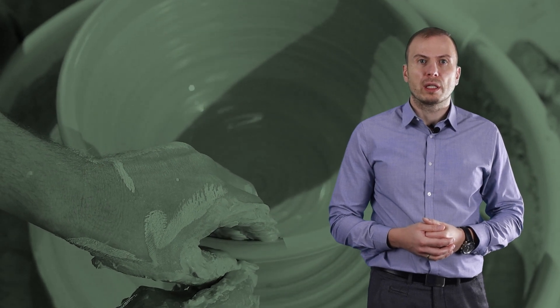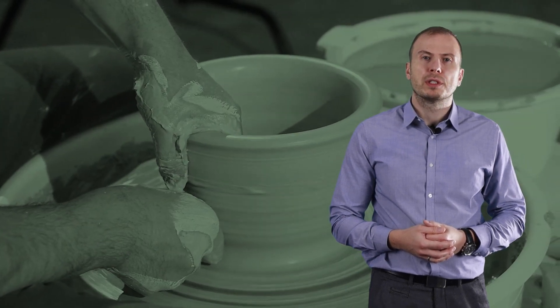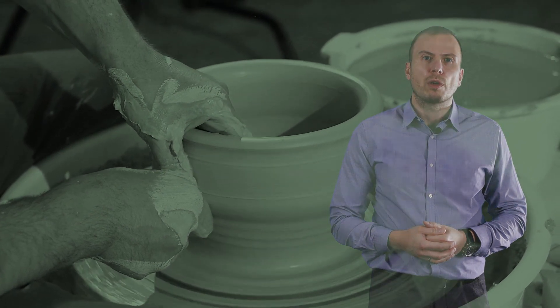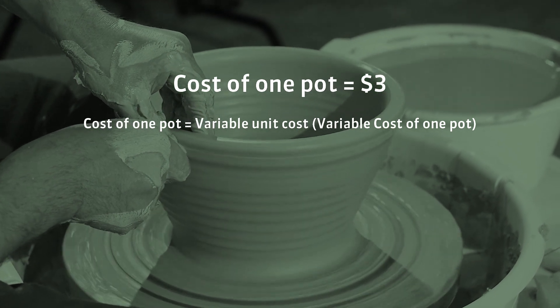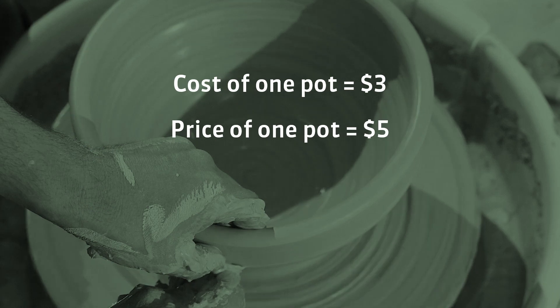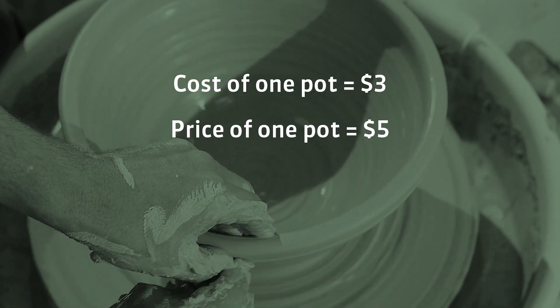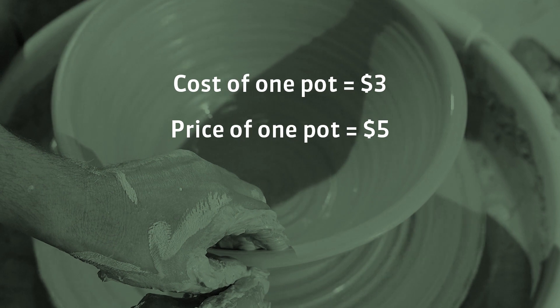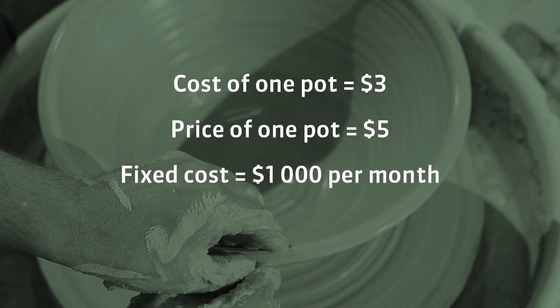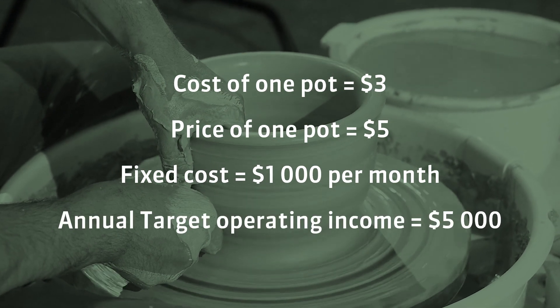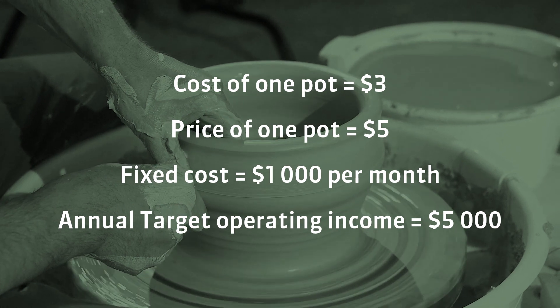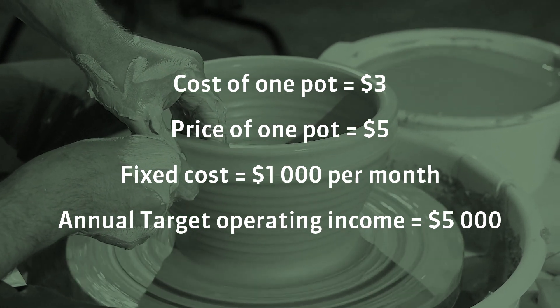Since we already know how to calculate target income, let's practice by analyzing an example. Imagine a company that produces flower pots. The cost of production of one pot is three dollars, the price of one pot is five dollars, and the fixed cost is one thousand dollars per month. How many pots does the company need to sell to reach an annual operating income of five thousand dollars?